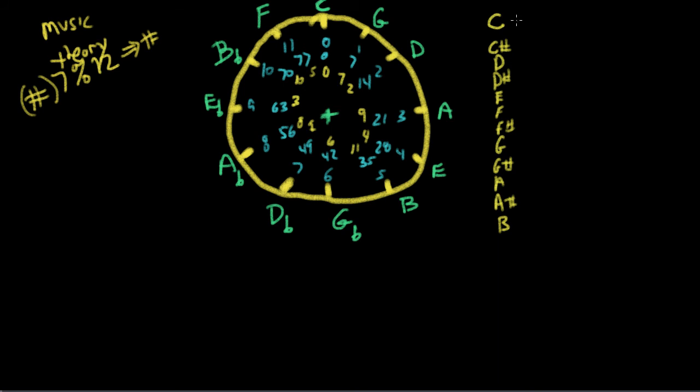If we start numbering these with 0, 1, 2, 3, 4, 5, 6, 7, 8, 9, 10, and 11, and then map these numbers back—remember how we multiplied by 7 and took the remainder—you get C is 0, G is 7, D is 2, A is 9. That in effect is mathematically how you get to Fat Cows Get Dizzy After Eating Butter. You start counting at 0 from C, multiply by 7, divide by 12 and take the remainder—that's called the modulus function.